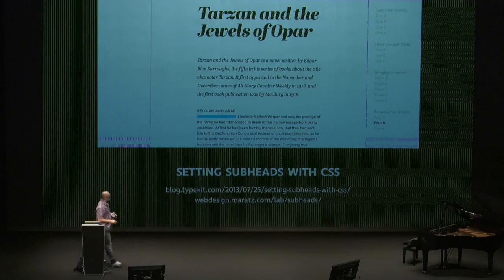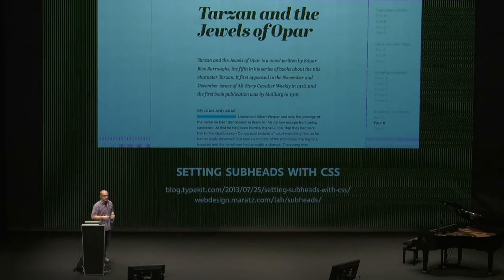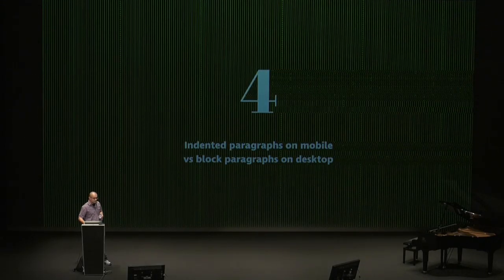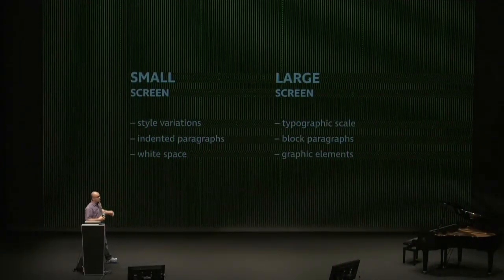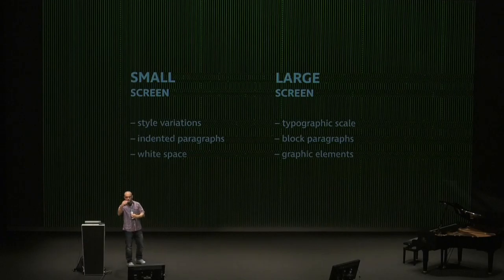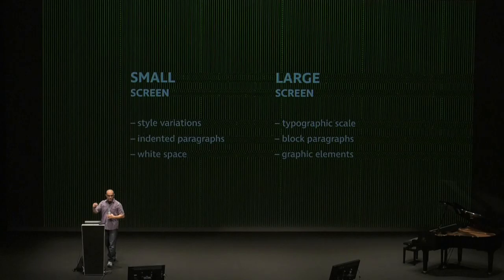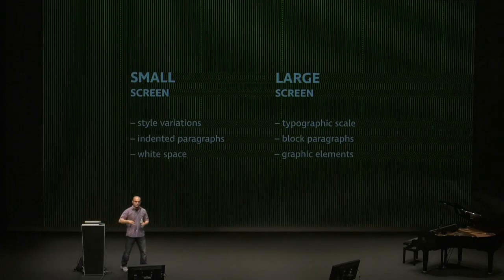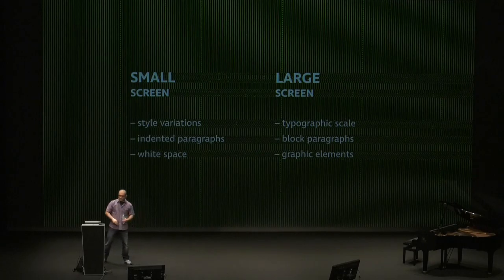I wrote an article about different ways to set subheads — there are about 20 different versions you can use, so you don't have to rely on just font sizing. Another thing: indent paragraphs instead of separating them on mobile, so you gain another line on the screen, and separate the paragraphs on desktop. Combining both rules: for small screens use style variations like all caps, small caps, or italics for subheads, indent paragraphs, and use white space to separate sections. On desktop, use different font sizes, block paragraphs with an empty line between them, and graphic elements like different background colors, borders, or textures to separate main content from sidebar or header.